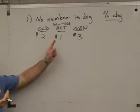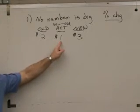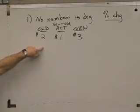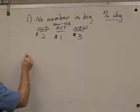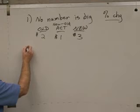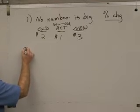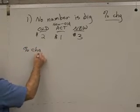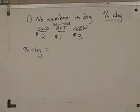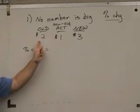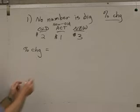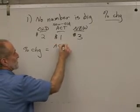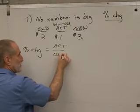And we take new minus old and that gives us the actual difference. And then we say, how does that actual difference compare with the old thing? And I think we said earlier or in that handout on words that have mathematical meanings, compare with or compare to means divided by. So if I compare 1 to 2, I take 1 and I divide it by 2. So percent change is always the actual change divided by what it used to be.